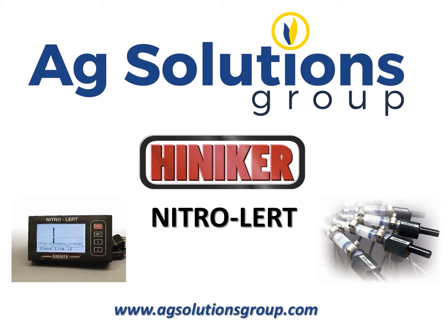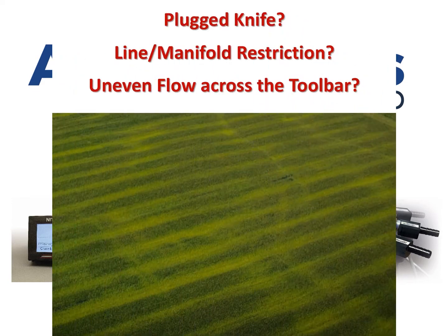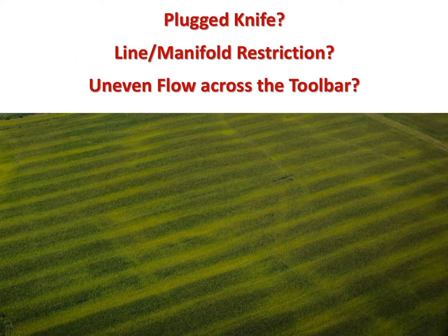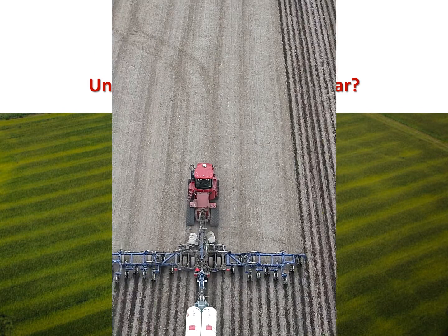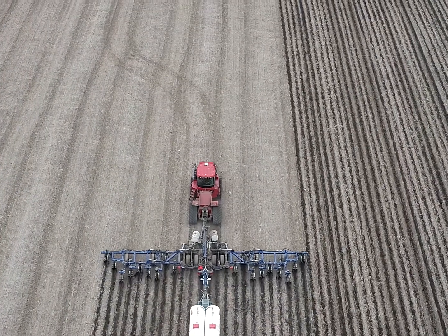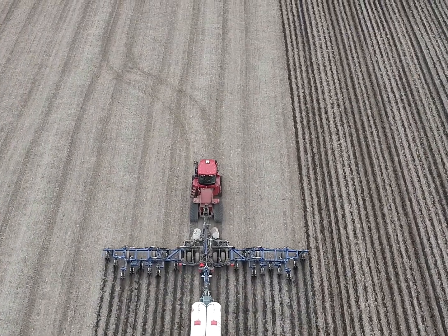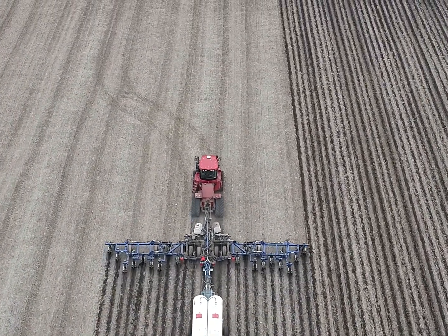Welcome to today's Ag Solutions Group People, Product, Knowledge segment where we want to talk to you about the Hineker Nitro Alert System. How many times have you seen a field like this — a plugged knife, a manifold or line restriction, or uneven flow across the toolbar? Today we want you to come along with us and learn more about the Hineker Nitro Alert System for your operation.